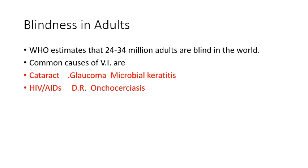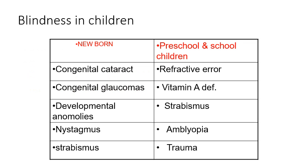The causes of blindness in children and adults are slightly different and you should be able to answer in your VIVA. In blindness in children, some causes are related to the newborn and some to preschool and school children. For newborns: congenital cataract, congenital glaucoma, developmental anomalies, nystagmus, and strabismus. For preschool and school children: uncorrected refractive error, vitamin A deficiency, strabismus, amblyopia and trauma are the causes of blindness.